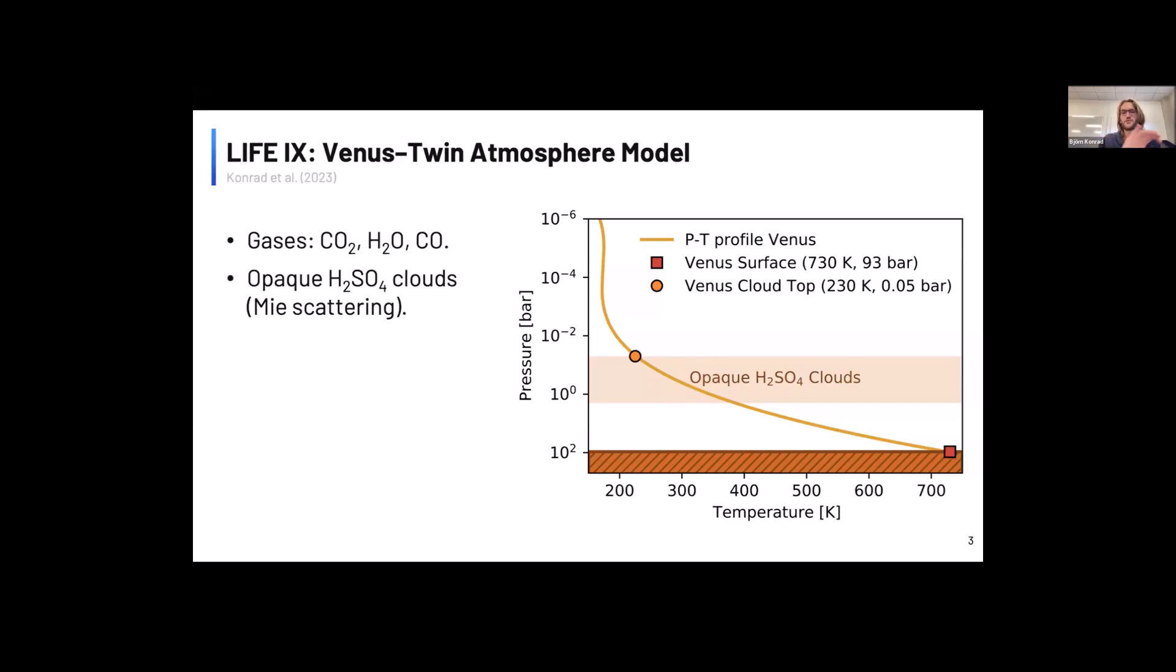And then the next thing we put into the atmosphere is this opaque cloud layer of sulfuric acid clouds, and we model the opacity of this cloud layer using Mie scattering. And then we use the radiative transfer model, Petitratrans, to calculate the mid-infrared emission at the top of this atmosphere. So basically what LIFE would measure.